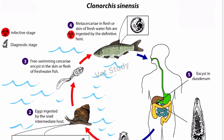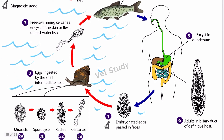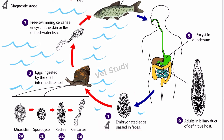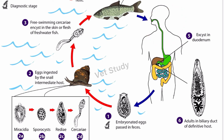After Opisthorchus, we have the parasite Clonorchus sinensis, which is very similar to Opisthorchus in terms of life cycle. The life cycle starts with embryonated eggs passed in feces, ingested by the snail as first intermediate host. Development takes place inside the snail, and the second intermediate host is fish, with humans as the definitive host.